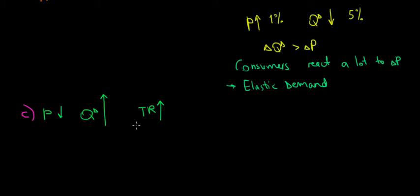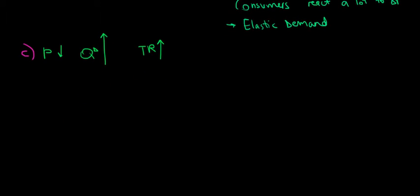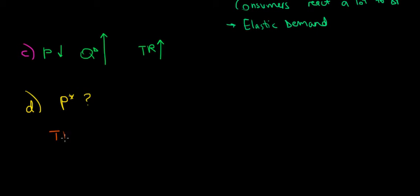Now let's look at part D. In part D, we want to find out which price is going to maximize total revenues — basically, we want to find the optimal price. Let's solve it both with math and on a graph.